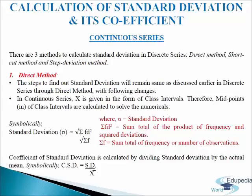First we will discuss direct method. The steps to find standard deviation will remain the same as discussed earlier in discrete series through direct method, with the following changes. The only thing to remember is that instead of x we use m midpoints, because x is in the form of class intervals. Symbolically it is written: standard deviation equals to the square root of sigma fd squared divided by sigma f. Where sigma fd squared equals to sum total of product of squared deviations and frequency, and sigma f equals to sum total of frequency or number of observations.